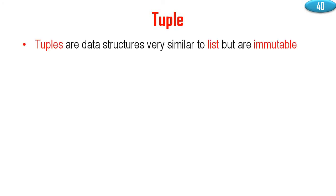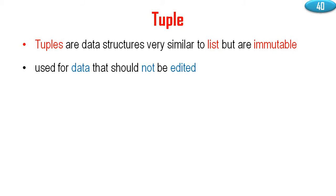Tuple. Tuples are data structures very similar to list but are immutable. The word immutable — immutability of list we have discussed. Tuples are data structures very similar to list but are immutable. It is used for the data that should not be edited.